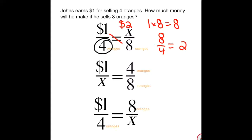Now let's check the second setup. Notice it's set up a little differently from the first one. In this one, we have the one dollar over x, which is the value we're solving for, is equal to the four oranges over the eight oranges. We'll use cross multiply and divide again. So first thing we do is one times eight, which we know is equal to eight.